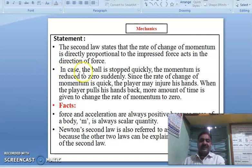In the same way, in case the ball is stopped quickly, the momentum is reduced to zero suddenly. Since the rate of change of momentum is quick, the player may injure his hands while catching the ball. When the player pulls his hands back, more amount of time is given to change the rate of momentum to zero.